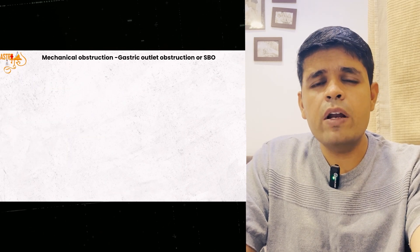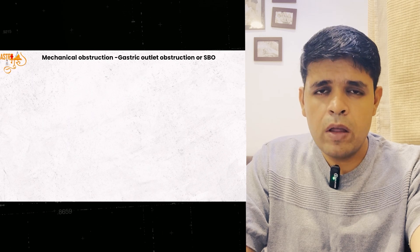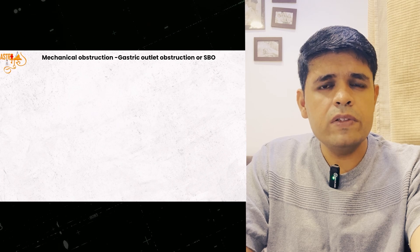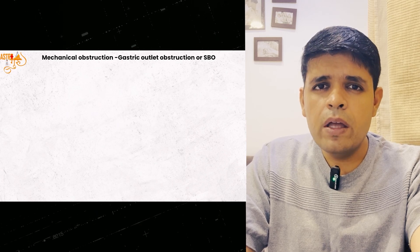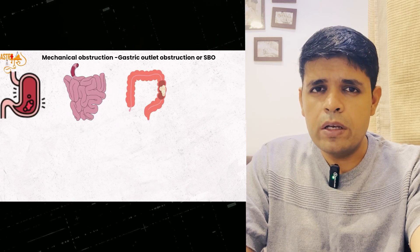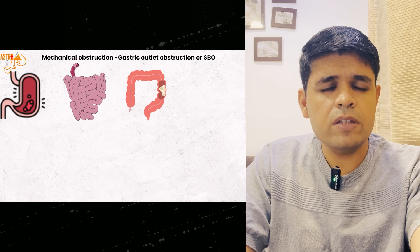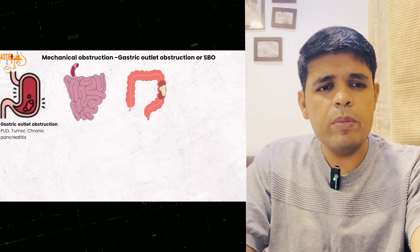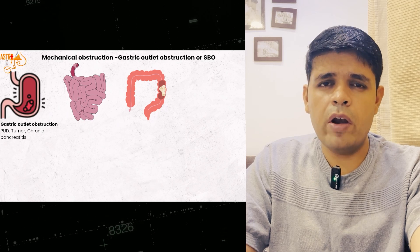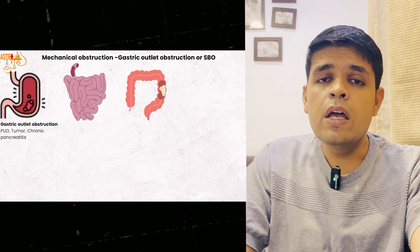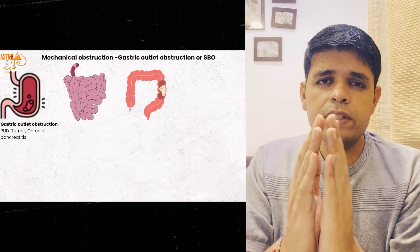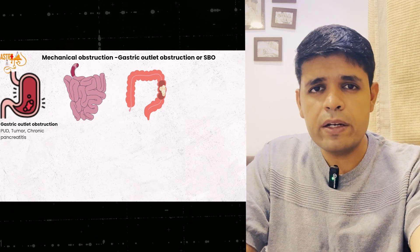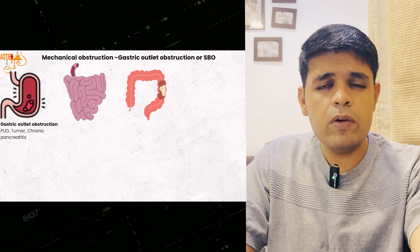First, we come to mechanical obstruction. The digestive system is divided into stomach, intestine, and colon. There can be obstruction at the stomach level — it can be gastric outlet obstruction like peptic ulcer disease, tumor, or chronic pancreatitis (also known as groove pancreatitis), where the duodenal groove is narrowed and compressed by the head of the pancreas due to recurrent pancreatitis, causing gastric outlet obstruction.